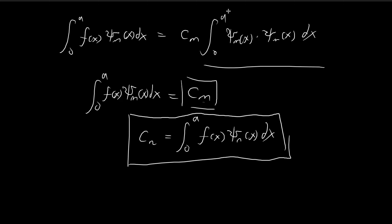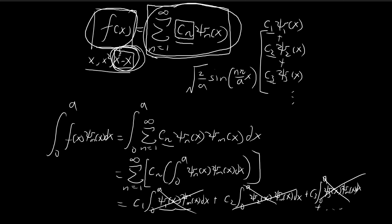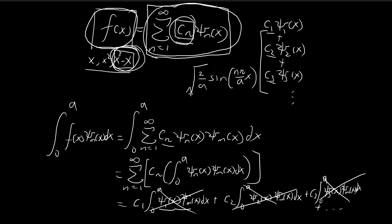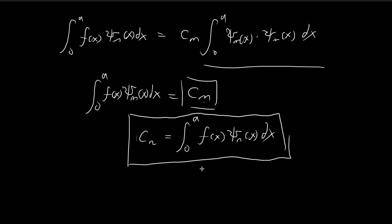What this means is that if I'm given a function, say x³ minus x, I can use this expression to tweak the constants cn so that the left-hand side equals the right-hand side, and the formula for cn is given by this integral expression. All this mathematics is very useful because we can actually use it to construct our solution for the wave function.